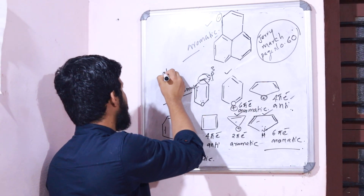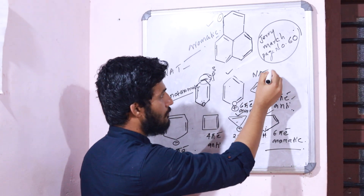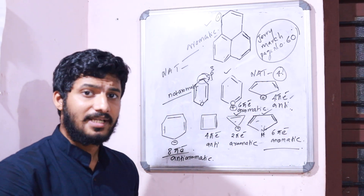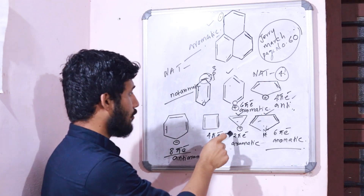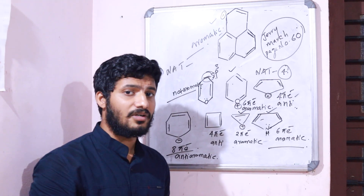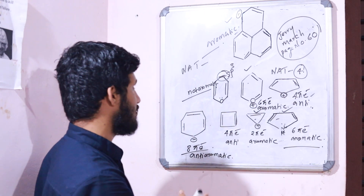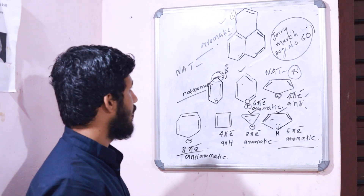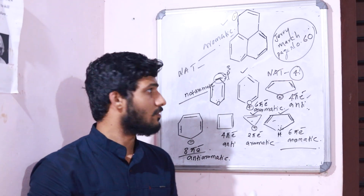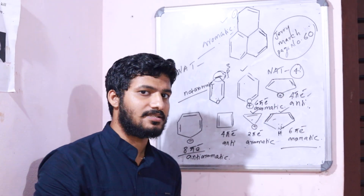This is a numerical answer type question. Four compounds follow aromatic character: this species is aromatic, this species is aromatic, this species is aromatic, and the phenylenyl anion is also aromatic in nature. This compound is showing another resonant structure — it is also aromatic in nature, as shown in Jerry March page number 60. So I expect the answer is 4.